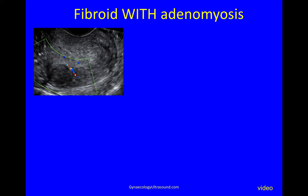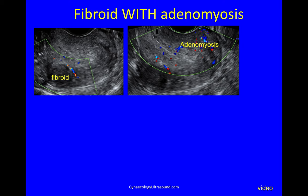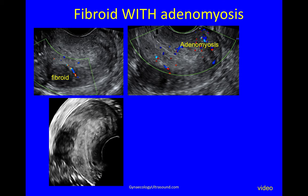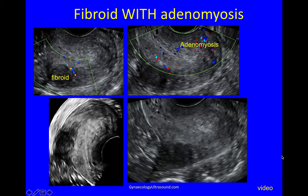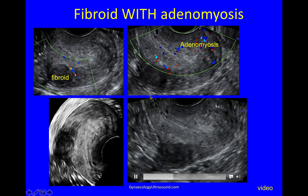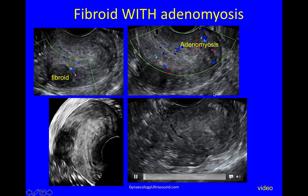Fibroids and adenomyosis can coexist. In this case with a retroverted uterus you can see a fibroid with circumferential colour Doppler flow alongside adenomyosis where the vessels traverse the lesion. On 3D the fibroid is almost subserosal, and you can see the adenomyosis with little myometrial cysts. In the video you can see the endometrial cavity very clearly but the endomyometrial junction is very indistinct, and there is a mass in the posterior wall with myometrial cysts.